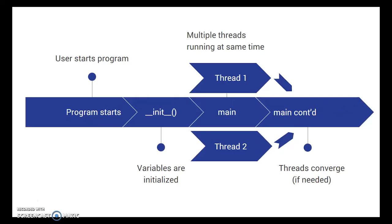and then the main function will then split off some threads to work on something at the same time, and then the threads can converge later in main or in some other function again before the program ends.